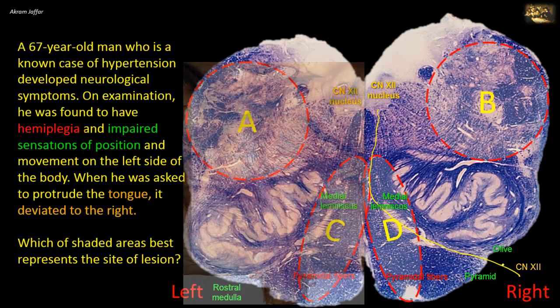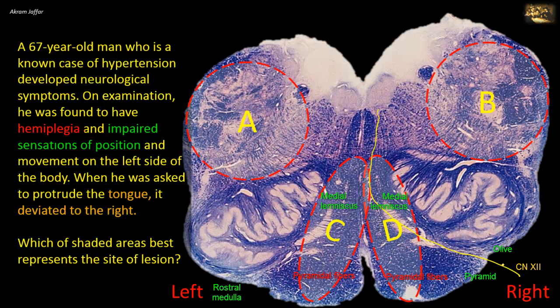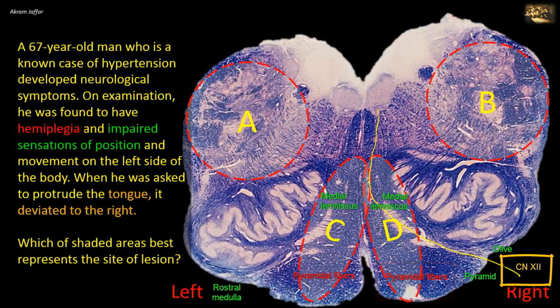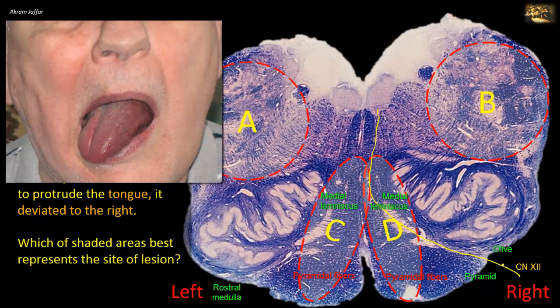It is not the nucleus that is affected but the nerve itself. These three structures — the medial lemniscus, the pyramid, and the hypoglossal nerve — are closely related and can all be affected by ischemia from the vascular lesion. The hypoglossal nerve supplies all muscles of the tongue except palatoglossus. When genioglossus, the bulkiest muscle of the tongue, is paralyzed, the protruded tongue deviates to the affected side. Since the tongue deviated to the right and this is a lower motor neuron lesion, it is the right hypoglossal nerve that is affected, so shaded area D is involved.